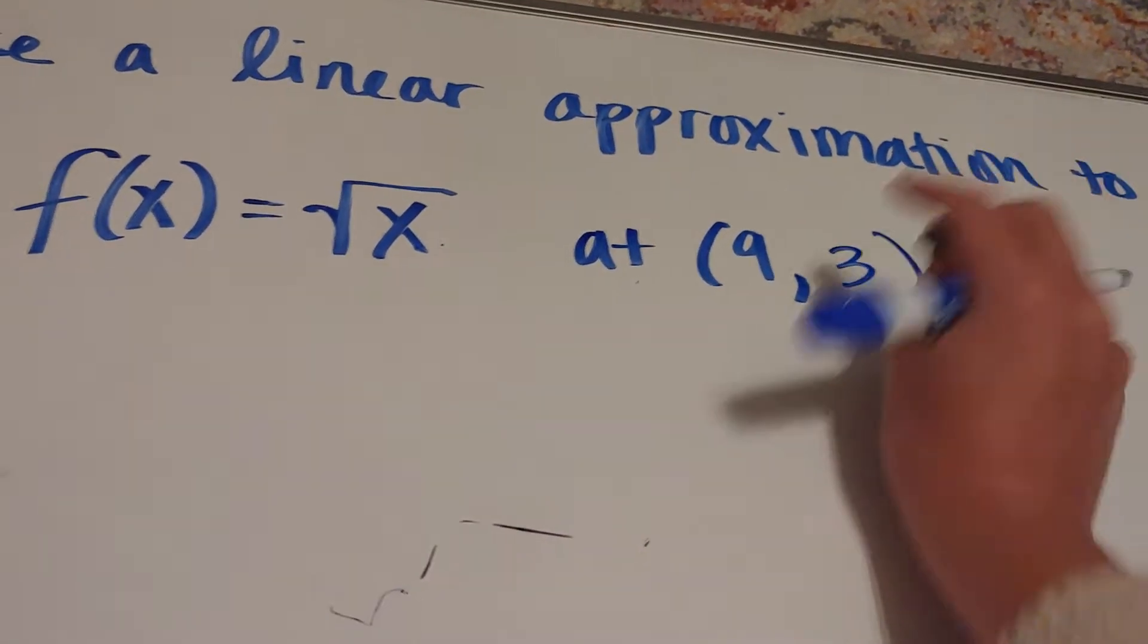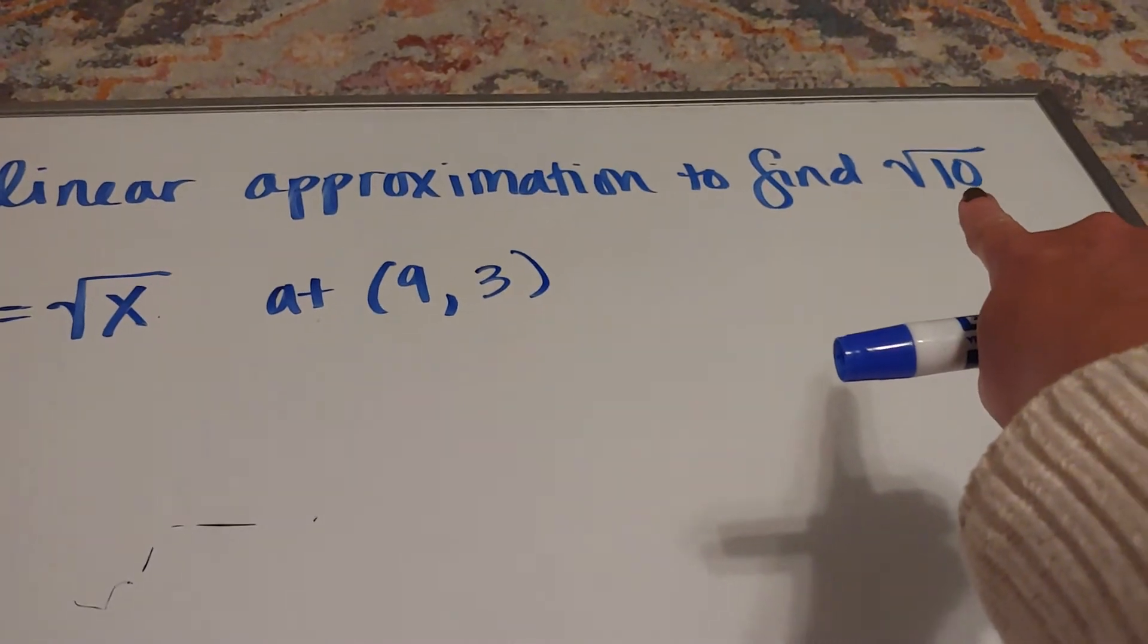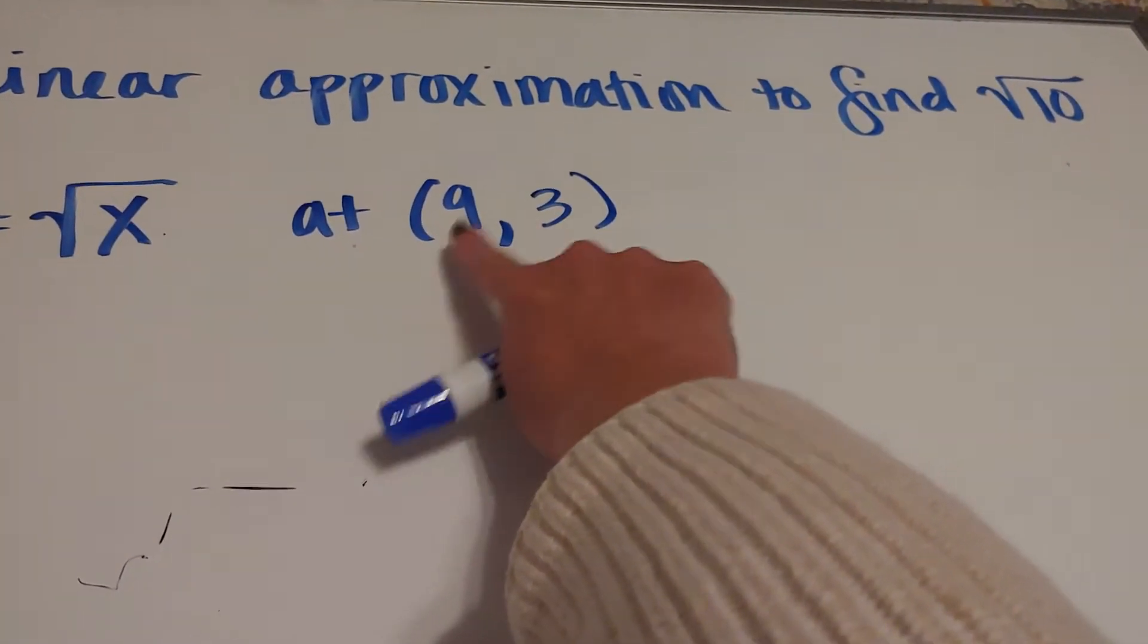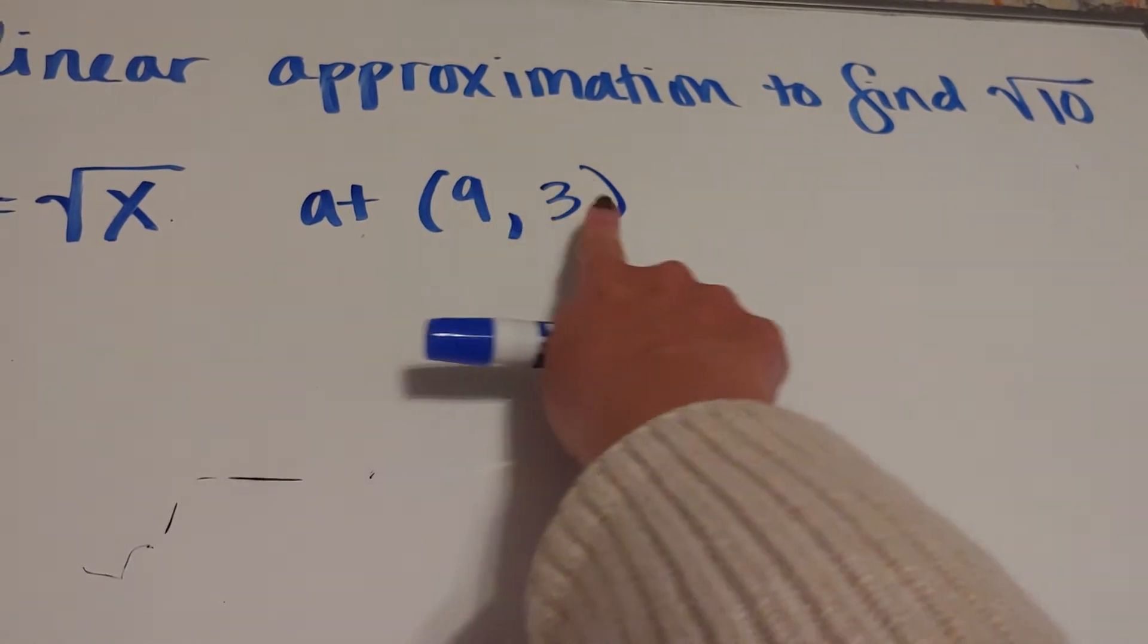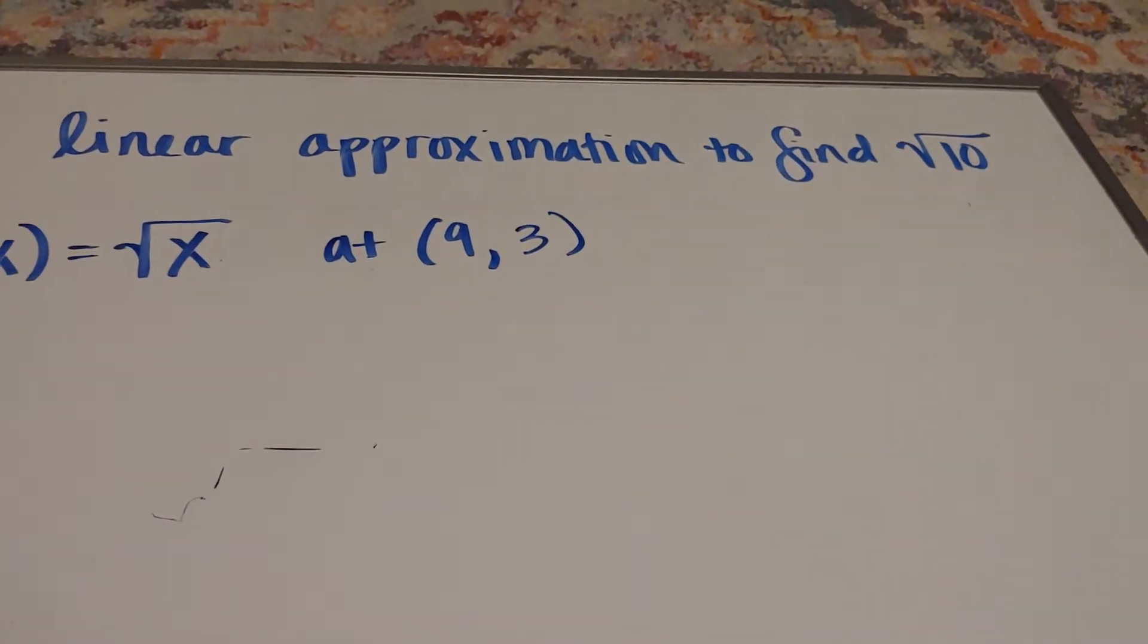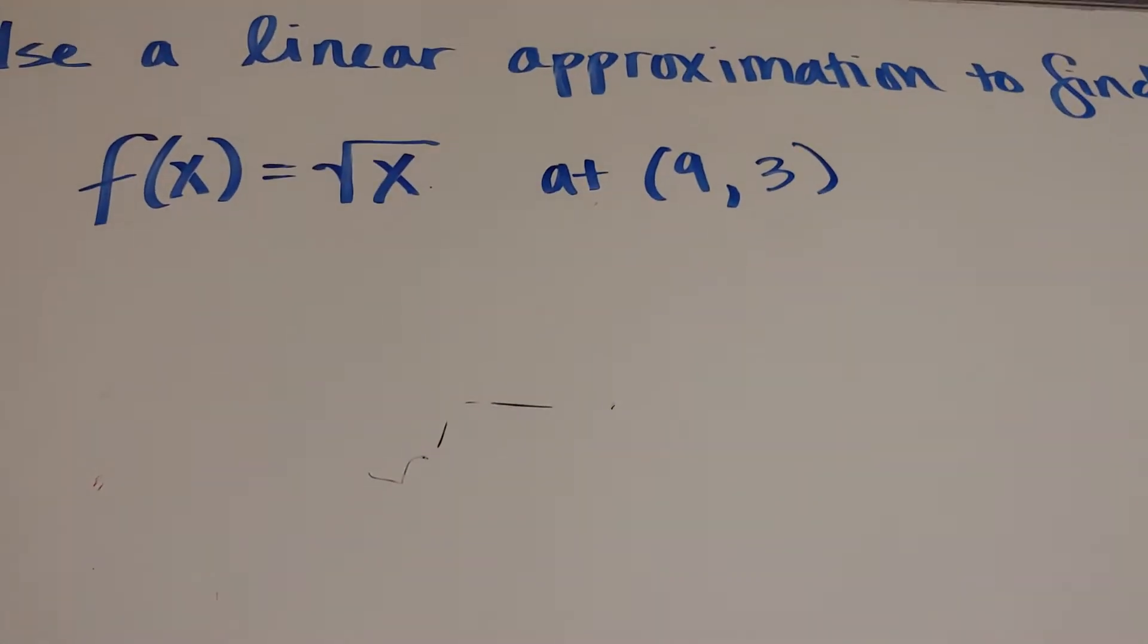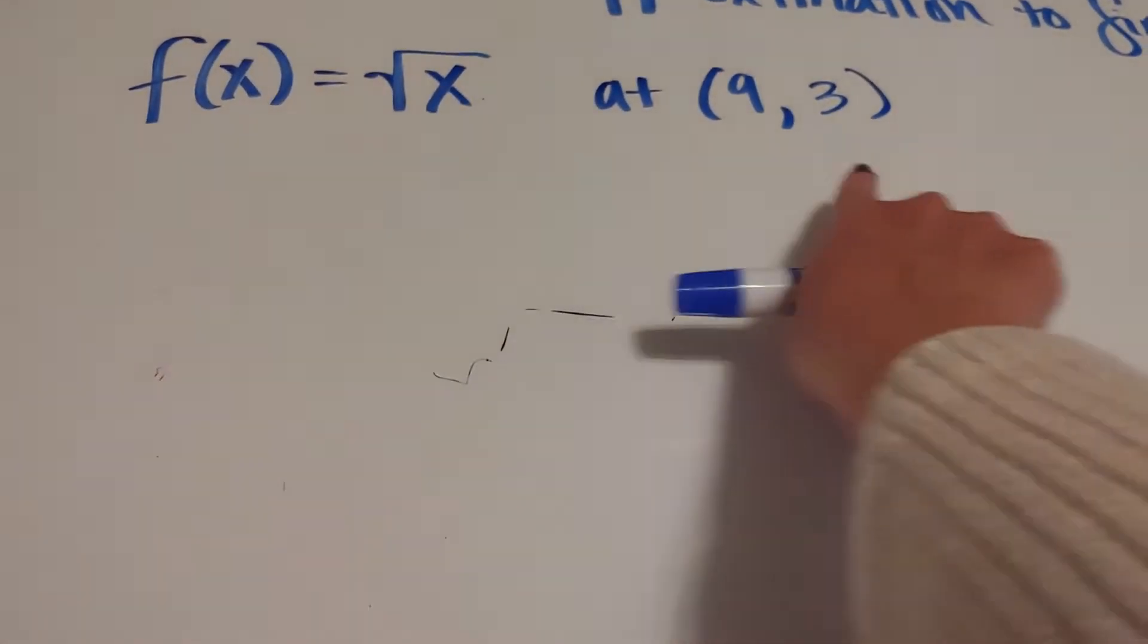So the whole point of this is to pick a value that you know. If that was the square root of 12, I would either use nine, three, or use 16, four. You're always going to choose your perfect square closest to the value. If it was the cube root, you choose a perfect cube.